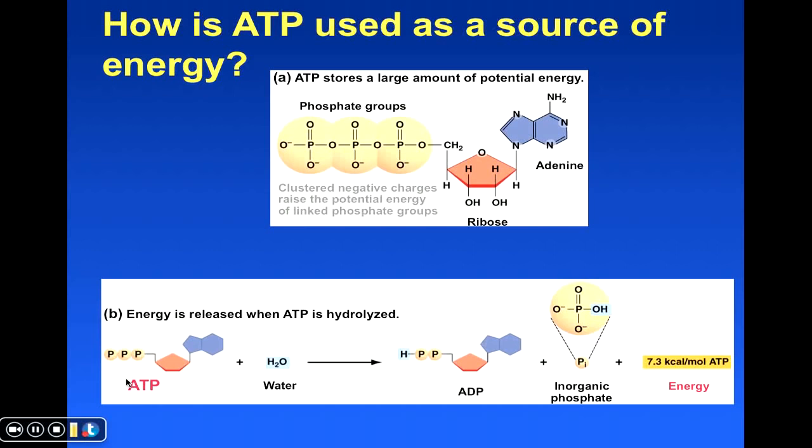And when it is used during a reaction, essentially what happens, it releases a phosphate, typically one of these, the end phosphate down here. So it releases a phosphate, producing ADP, adenosine diphosphate, plus our extra phosphate here.